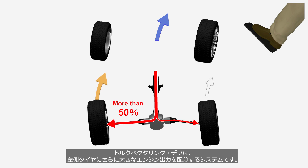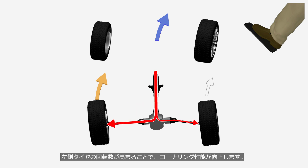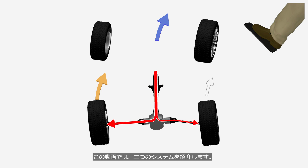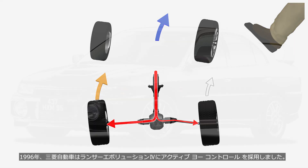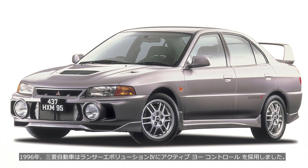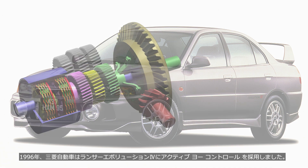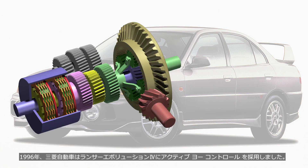A torque vectoring differential is a system that distributes more engine power to the left-side tire, increasing its rotational speed and improving cornering performance. In this video, we will learn about two systems. In 1996, Mitsubishi Motors introduced active yaw control in the Lancer Evolution 4.